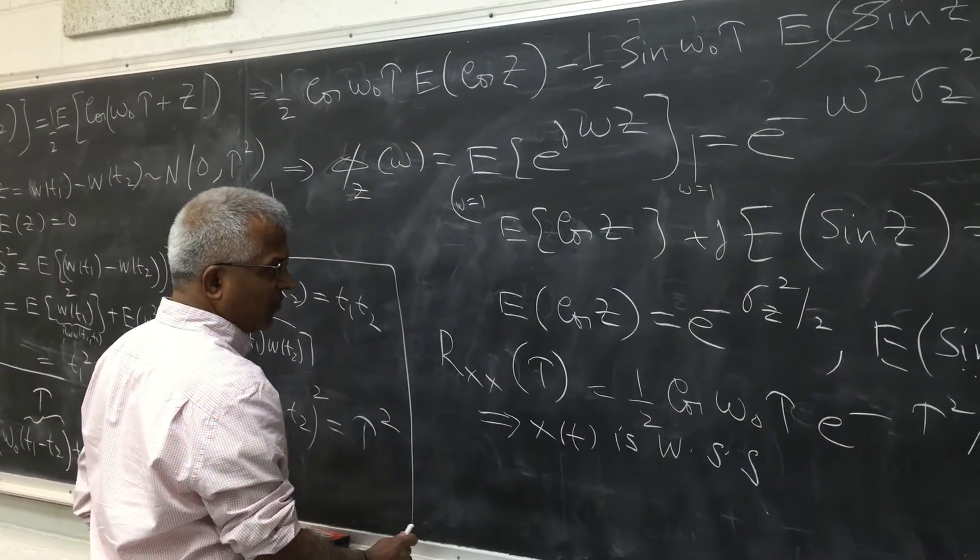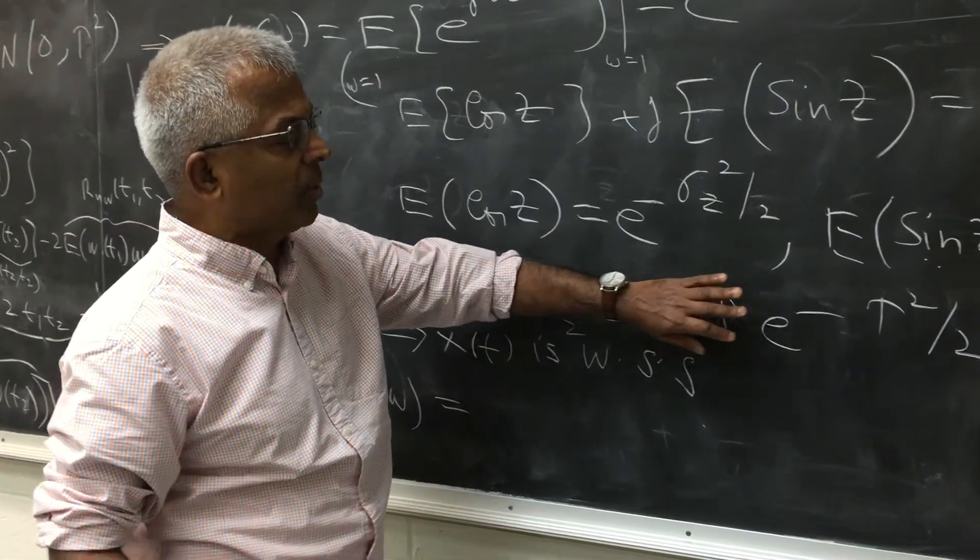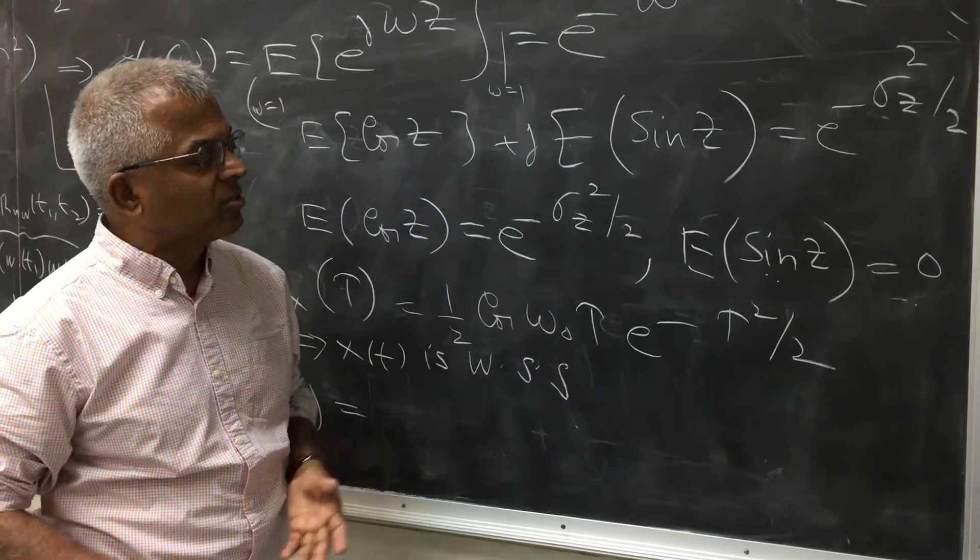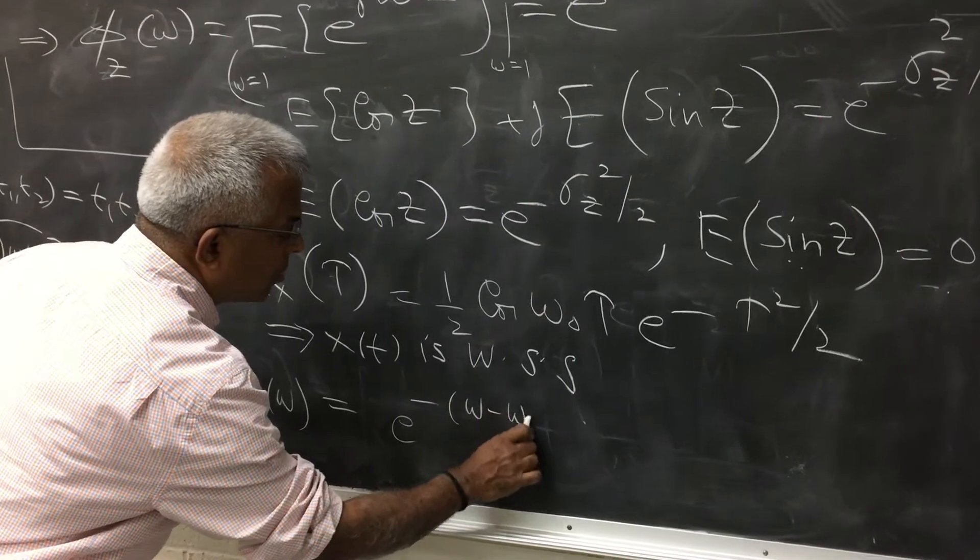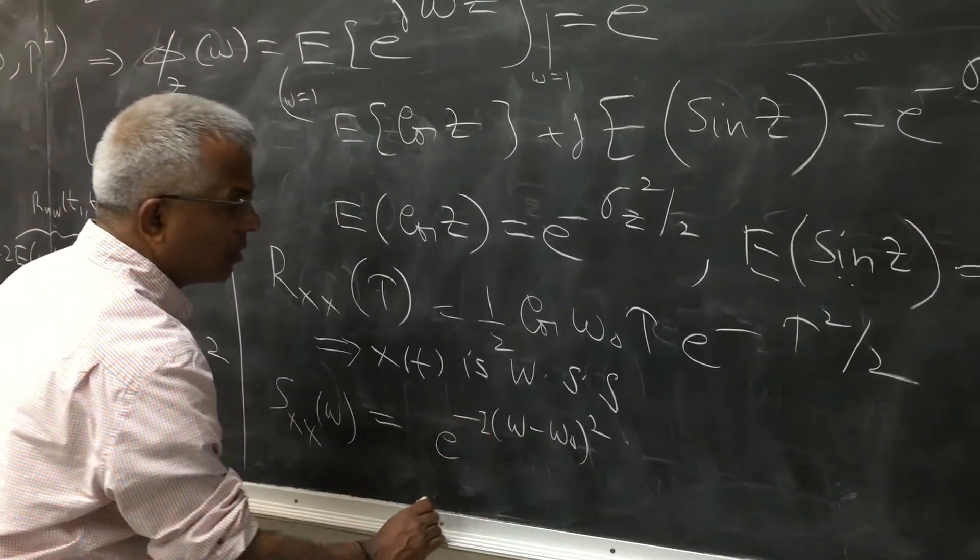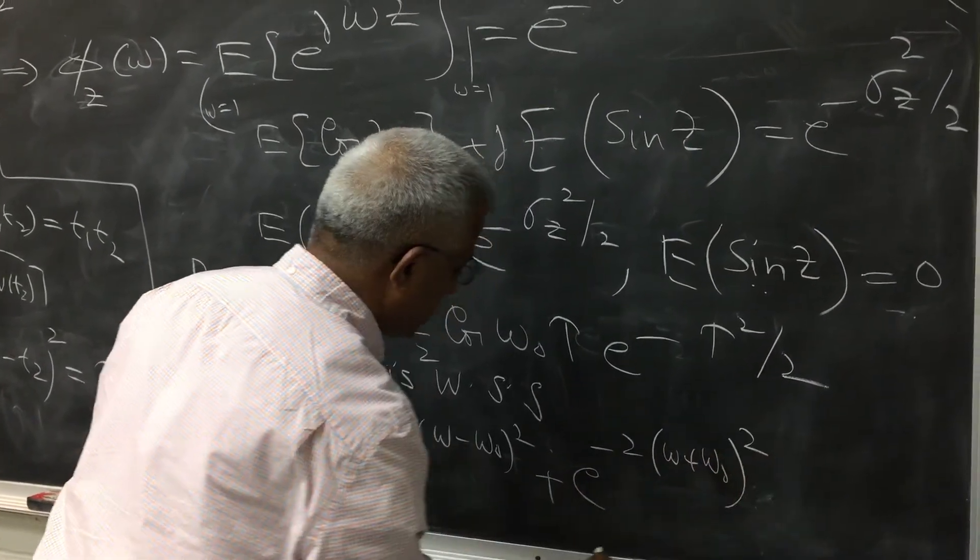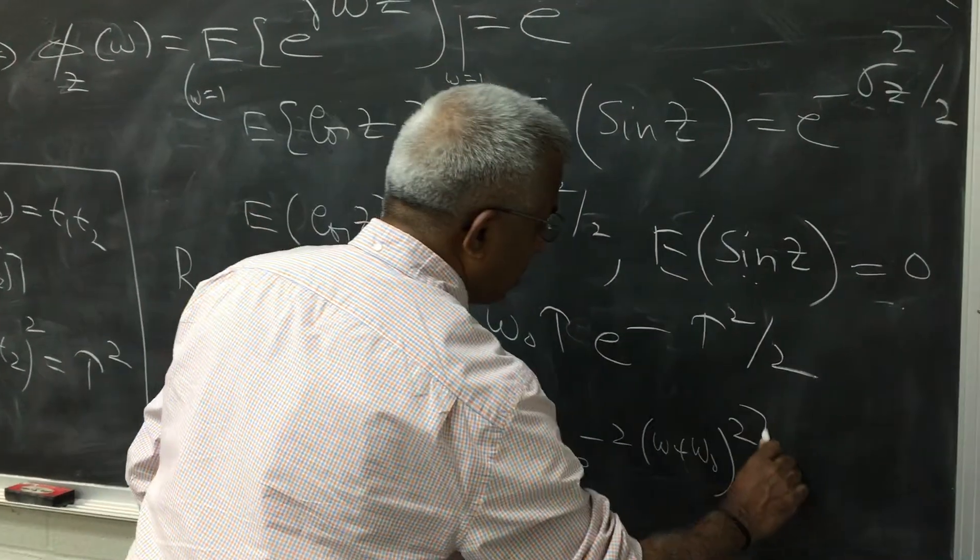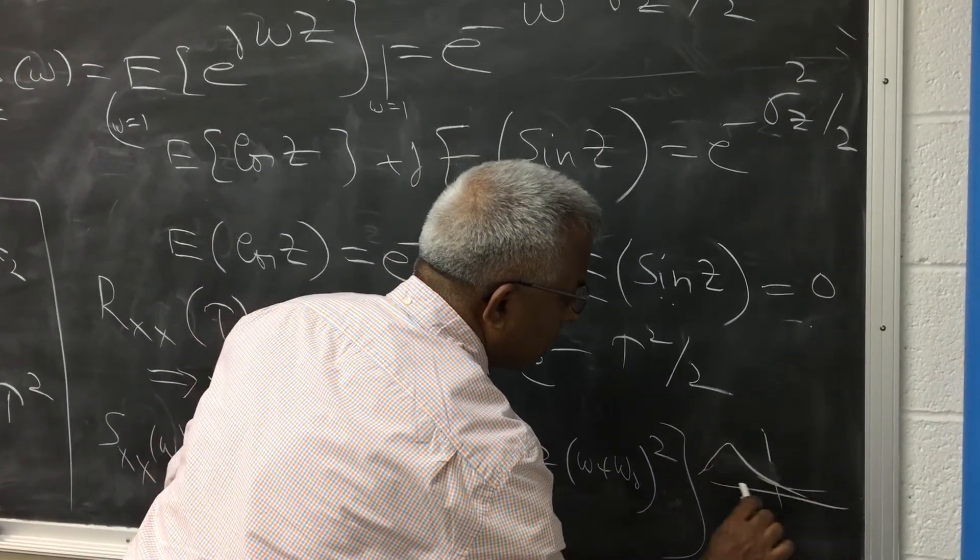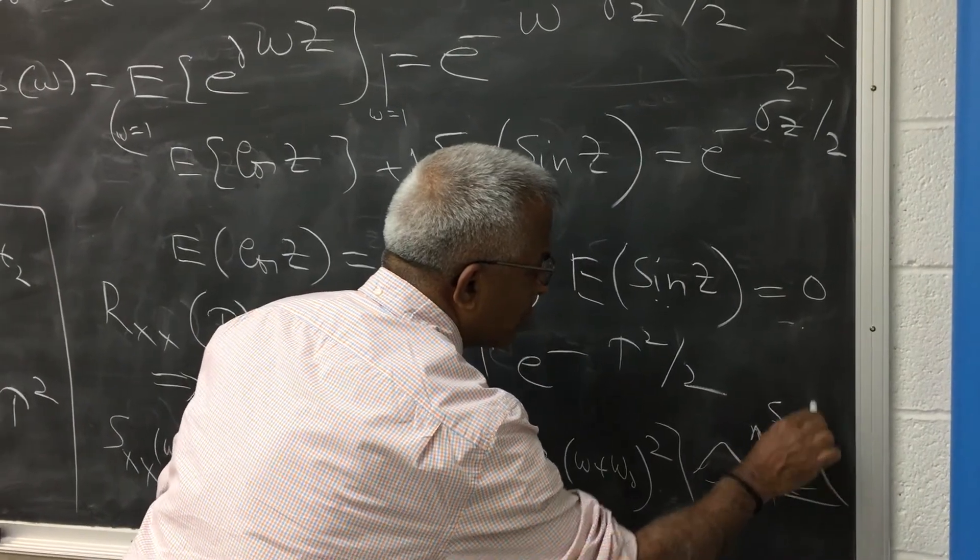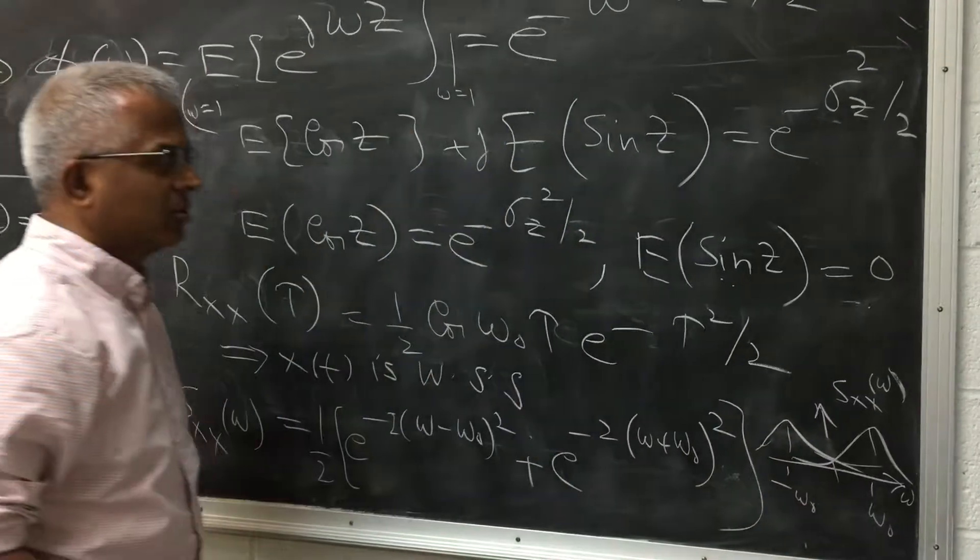From here if you want we can find the power spectrum of the output process. This is going to modulate the spectrum of this. But the spectrum of e raised to minus tau squared is once again Gaussian shape. So this is of the form e raised to minus (omega minus omega naught) the whole square plus e raised to minus (omega plus omega naught) the whole square, with a half here. If you plot the spectrum it has one Gaussian shape. Shifted Gaussian spectrum in the frequency domain peaking at omega naught and minus omega naught.